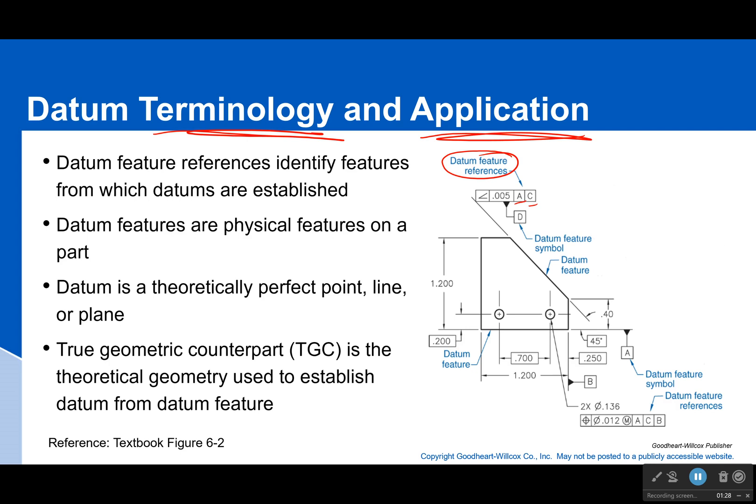So a datum is a theoretically perfect point, line, or plane. Your part is not perfect. This datum, which everything is being measured from, is perfect. You don't measure from the surface; you measure from this perfect datum.